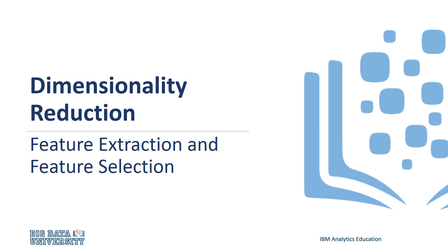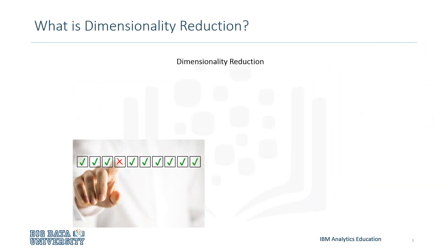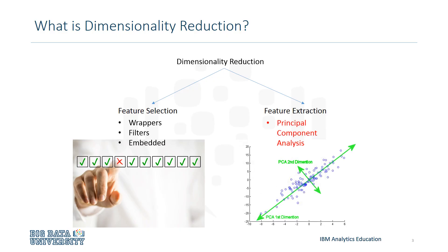Hello, welcome to Dimensionality Reduction using Feature Extraction and Feature Selection. Dimensionality reduction is the process of reducing the number of variables or features in review. Dimensionality reduction can be divided into two subcategories called Feature Selection, which includes wrappers, filters, and embedded, and Feature Extraction, which includes principal components analysis.